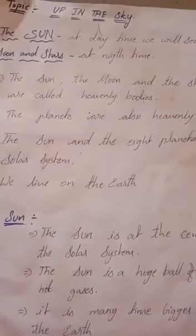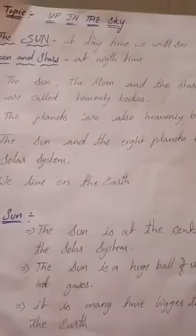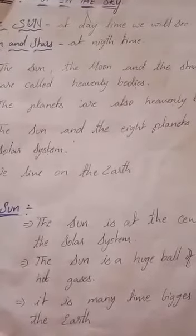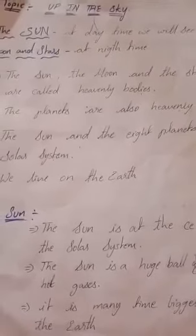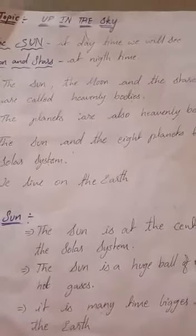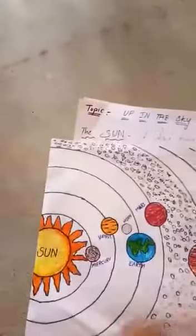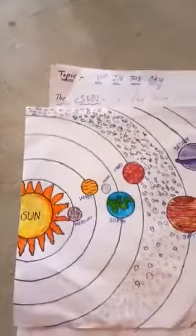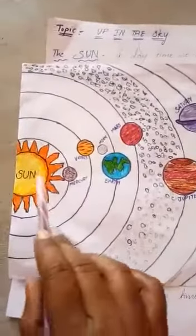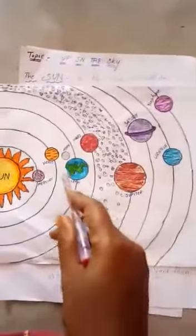The sun and the eight planets form the solar system. Now I will show you a solar system.